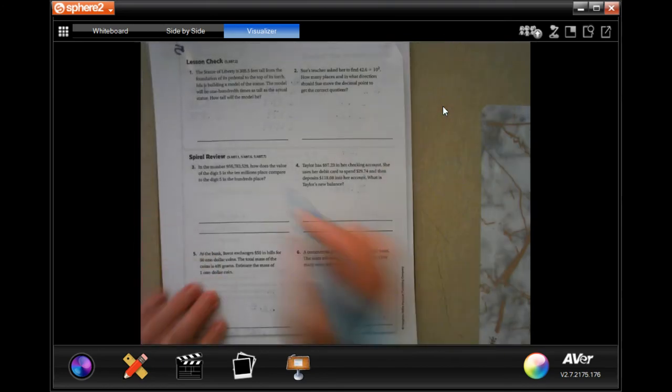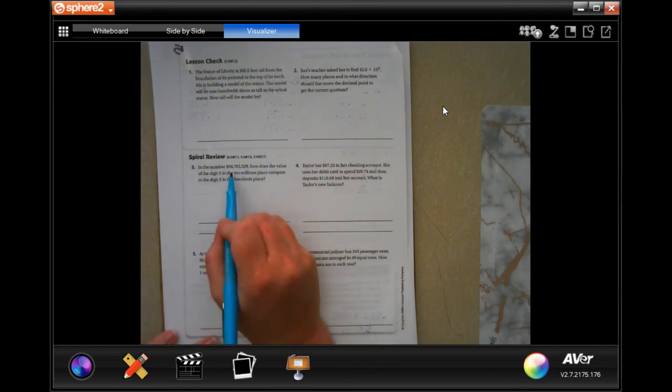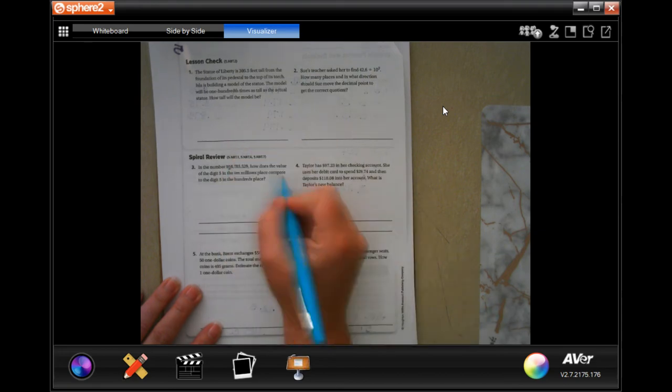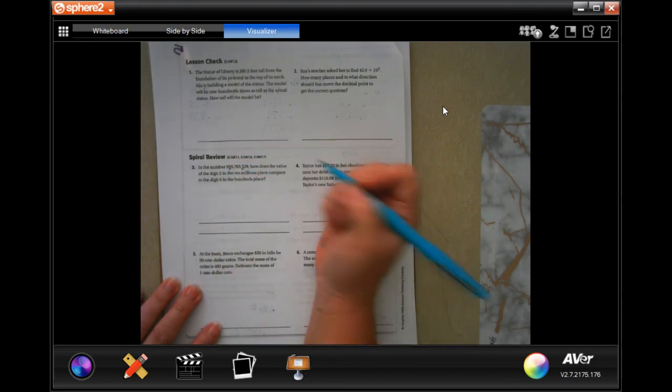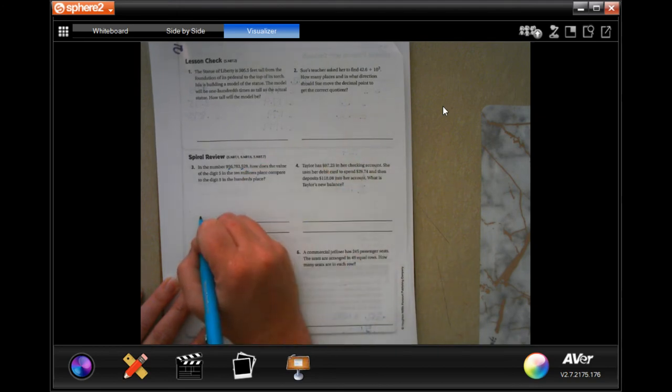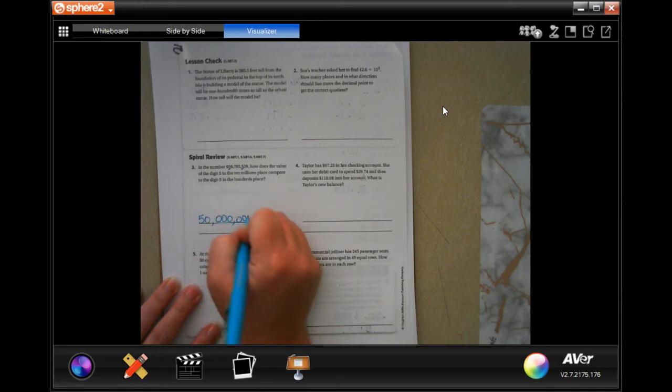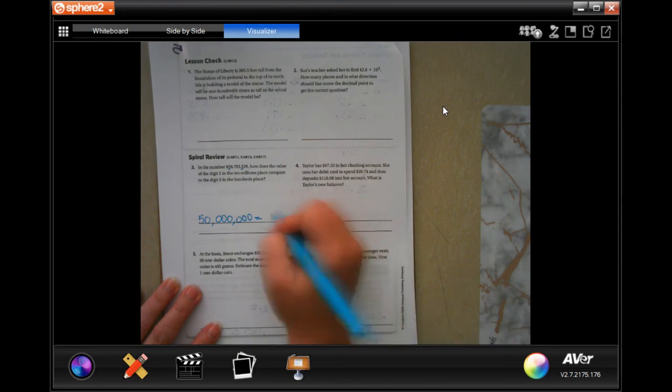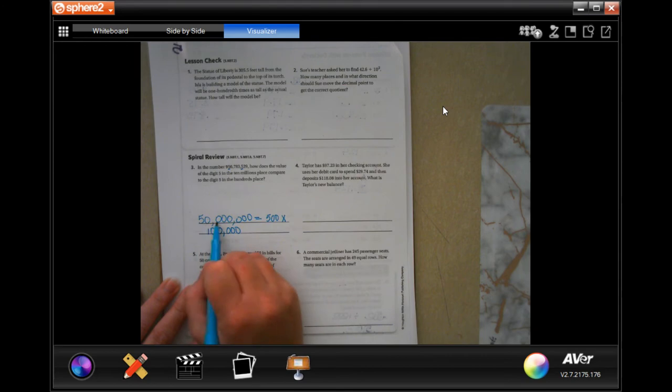We're going to go down to the spiral review. The number 956,783,529, how does the value of the five digit in the 10 million place compare to the digit in five in the 100s place? So, I would say 50 million equals 500 times 100,000. We took those two zeros, one, two, and we added on one, two, three, four, five, so there you go.